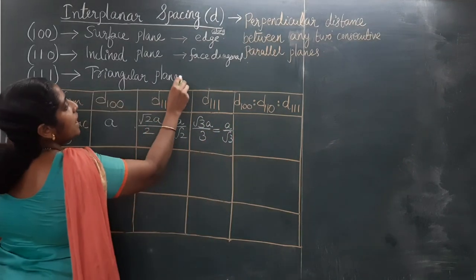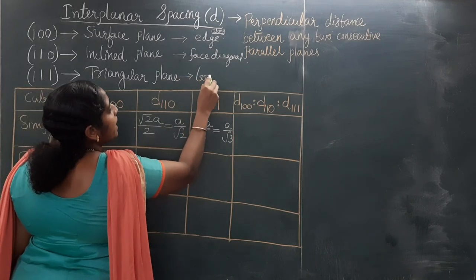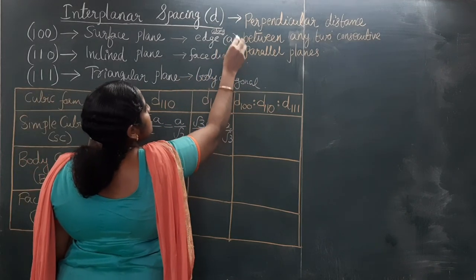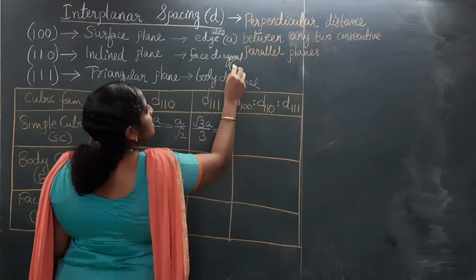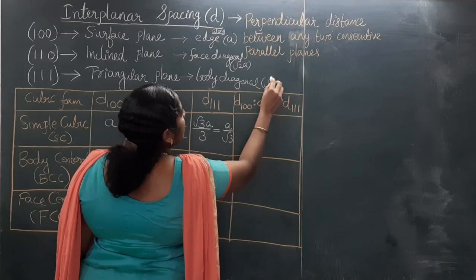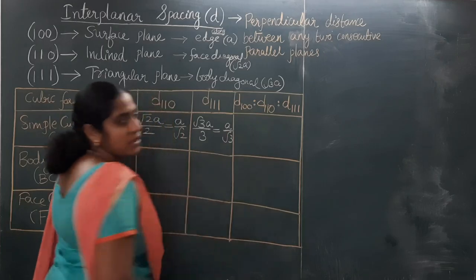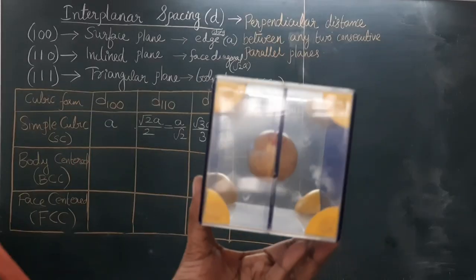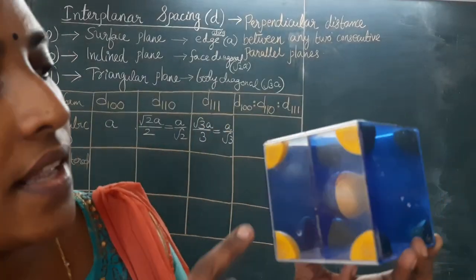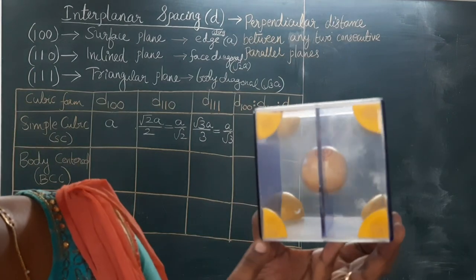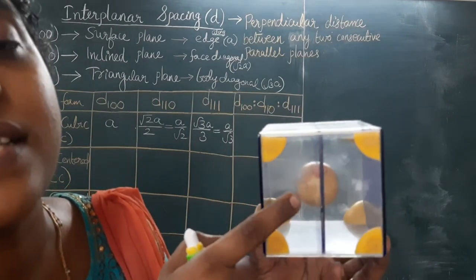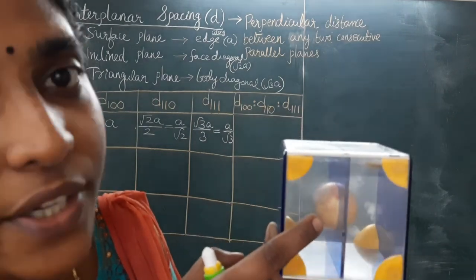To summarize: for the simple cubic structure, we considered the edge A for the 100 family, the face diagonal root 2 · A for the 110 family, and the body diagonal root 3 · A for the 111 family. Now, see this structure where atoms are at the corners and also inside the cubical structure — that is, it is body centered cubic.